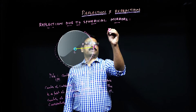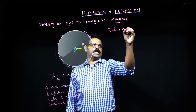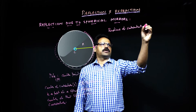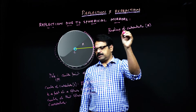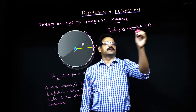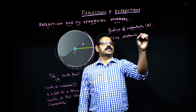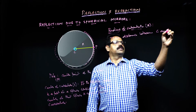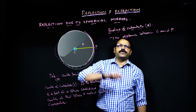The next definition is radius of curvature, denoted by R. The radius of curvature is nothing but the distance between C and P — that is, between the center of curvature and the pole.